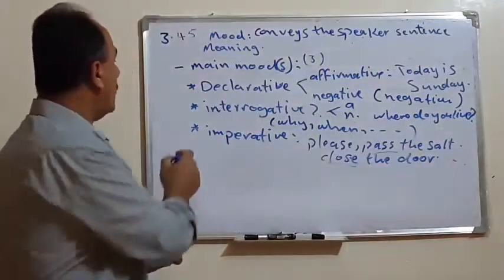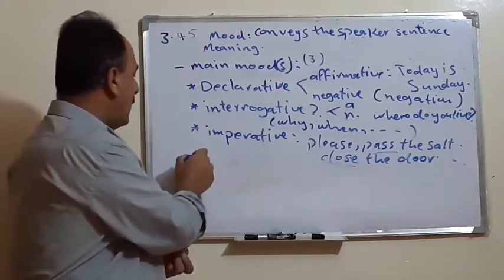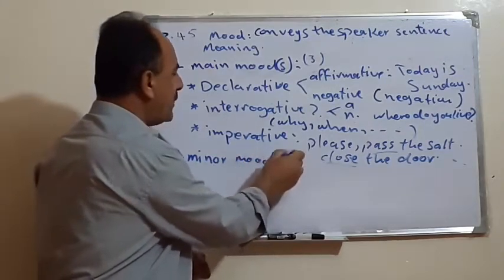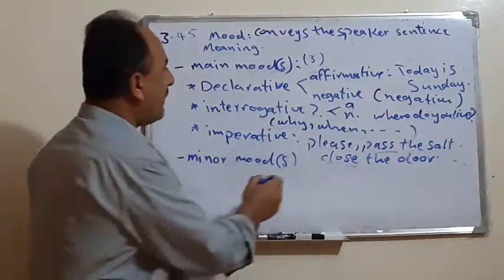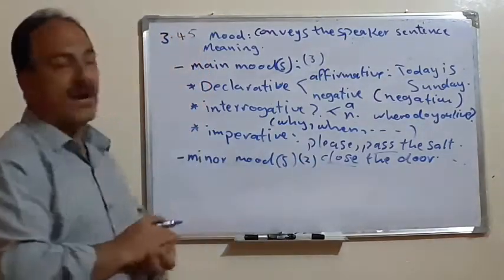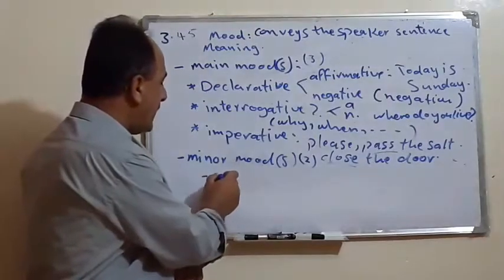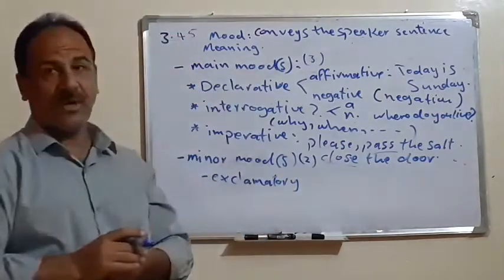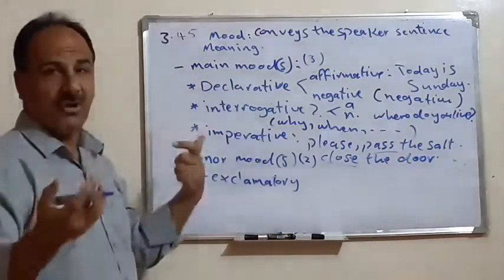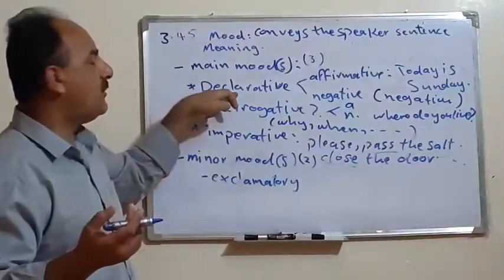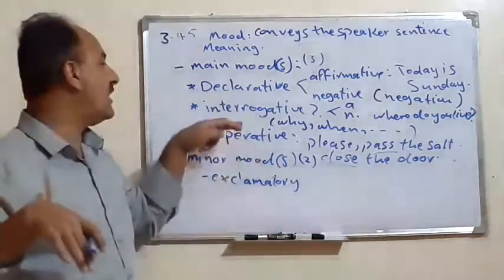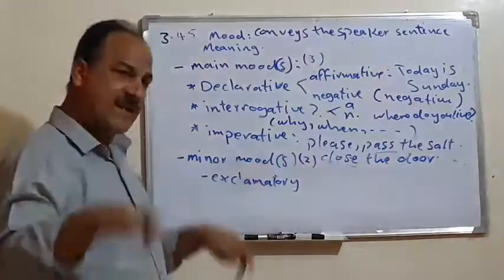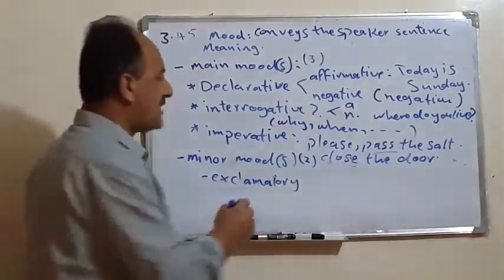The second group is what we call the secondary, or minor, moods. Here we have only two types of the minor moods. The first one is exclamatory. By the way, we arrange them in this order according to the proportion of use: most people mostly use the declarative, second is the interrogative, in a lesser degree the imperative, and then in an even smaller amount we use exclamatory sentences.